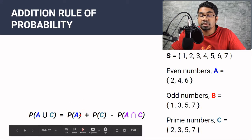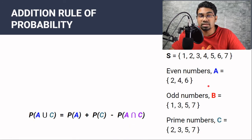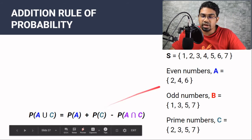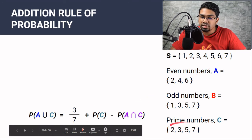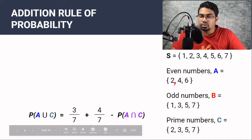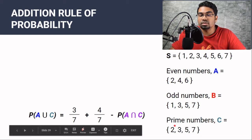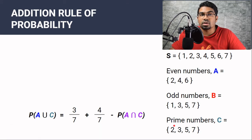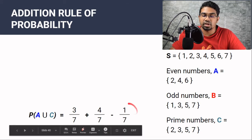Without the Venn diagram we can still figure out the probability. The probability of A is the number of outcomes of A over the total outcomes in the sample space. Probability of A is 3 out of 7. Plus probability of C, which is 4 out of 7. Minus probability of A intersect C — the number 2 is present in both A and C, so A intersect C is 1 out of 7. When we work this out, we get 6 out of 7.